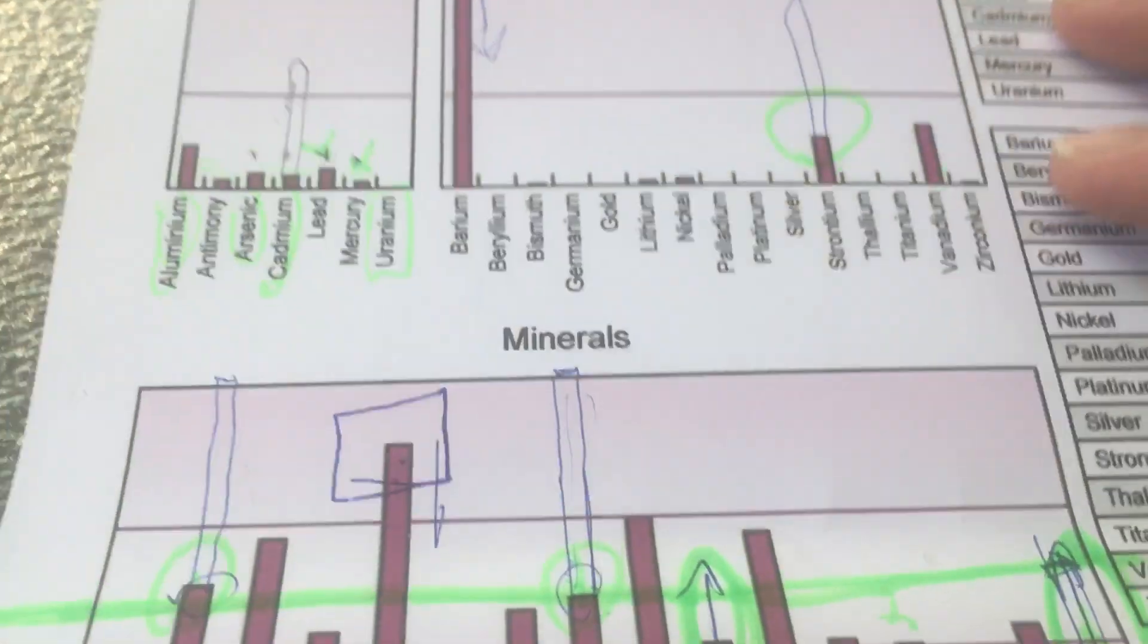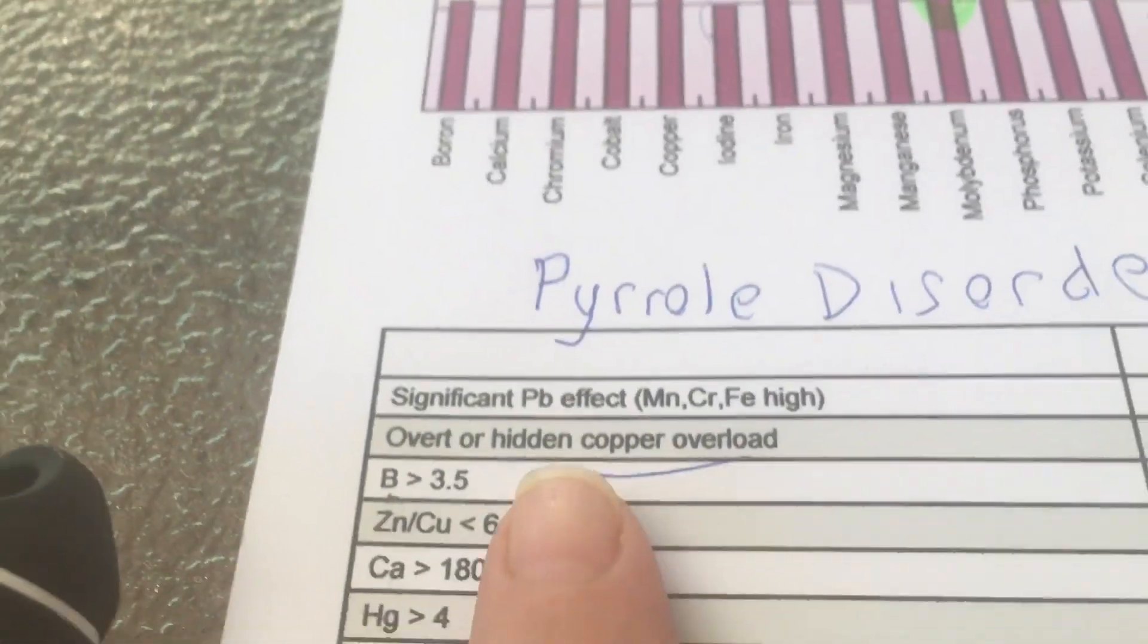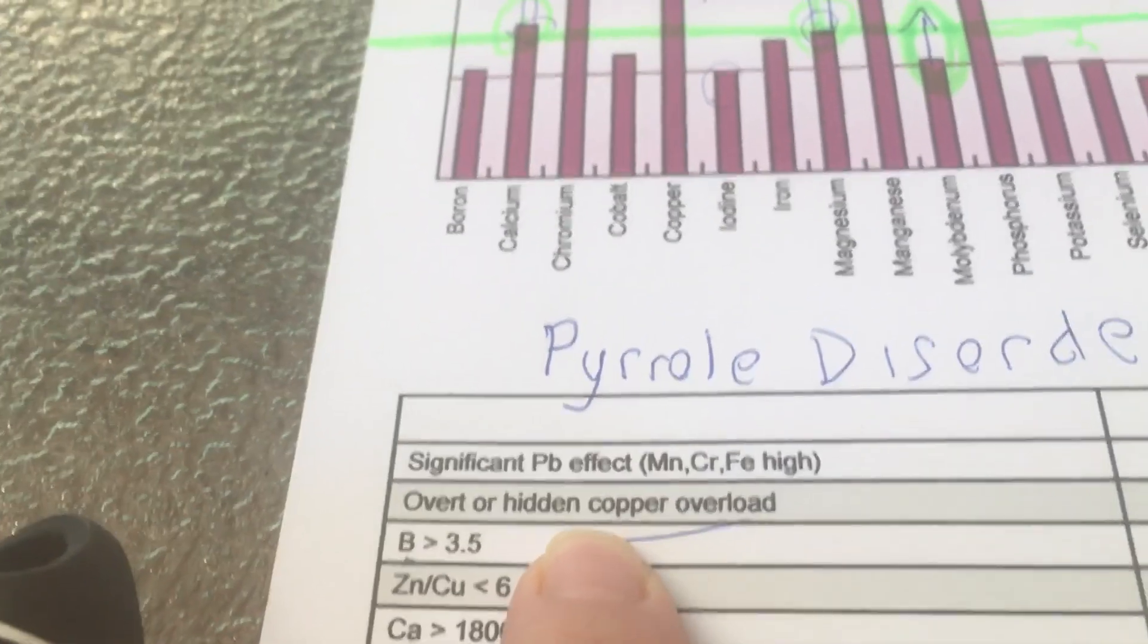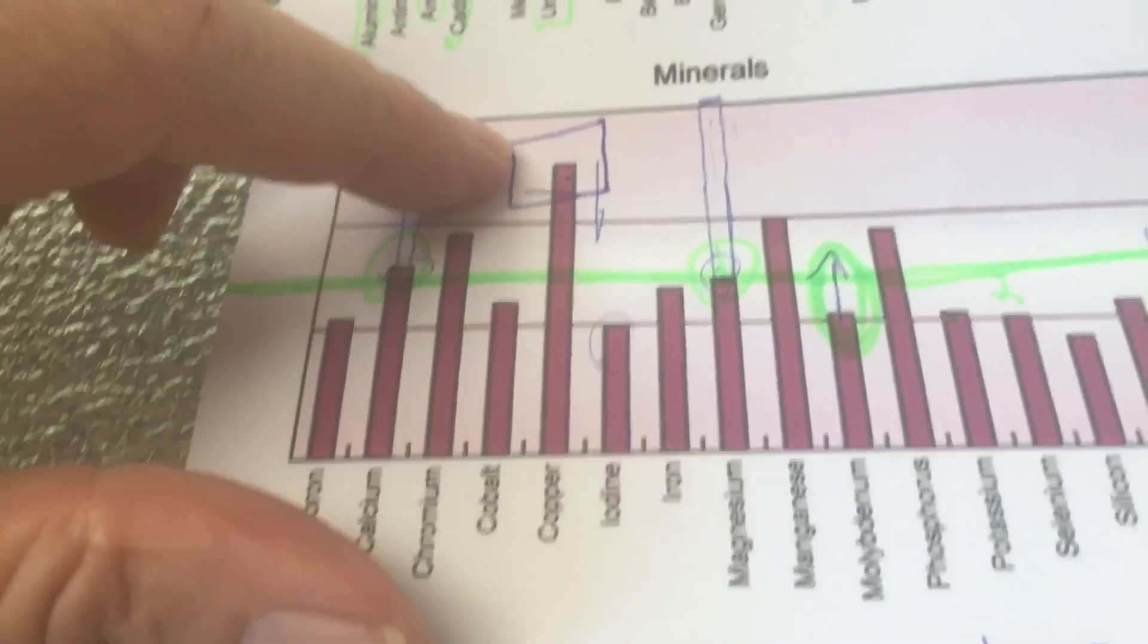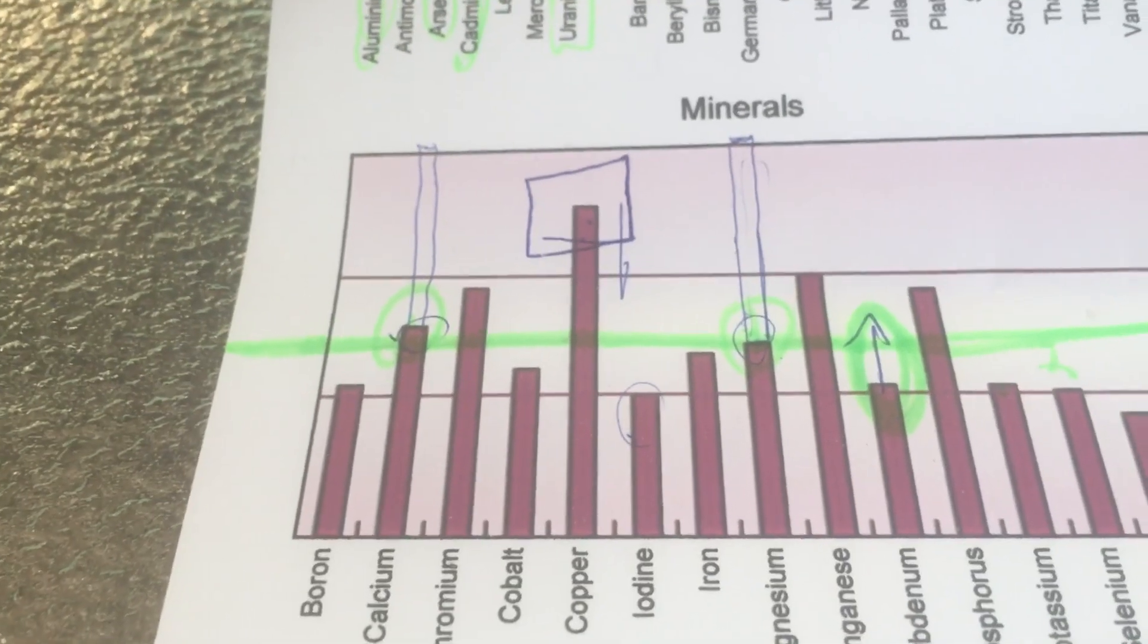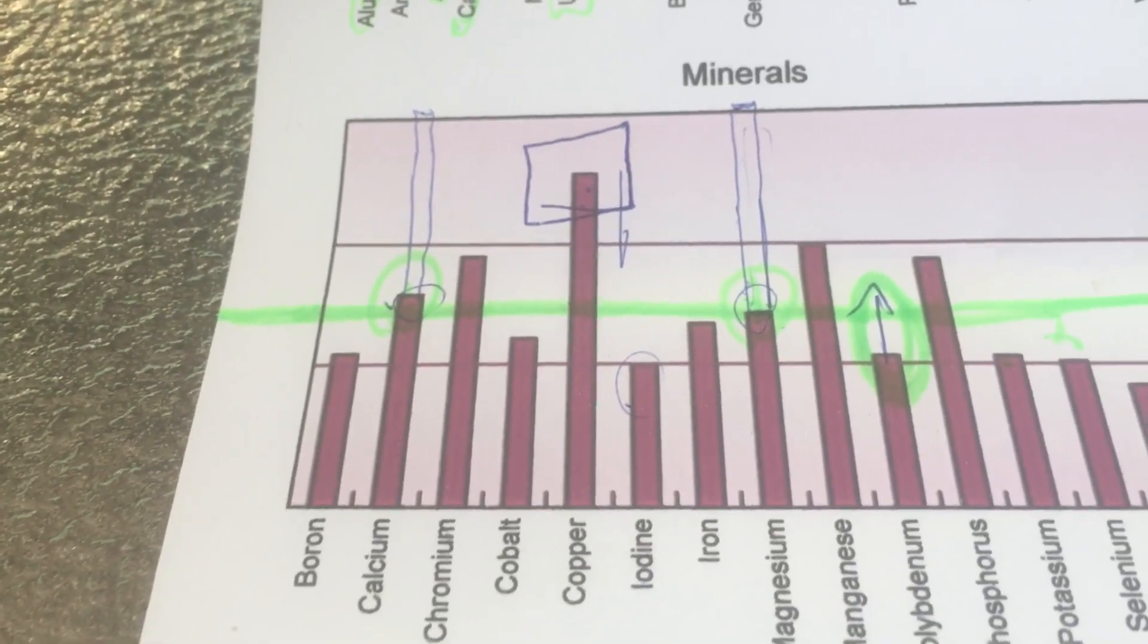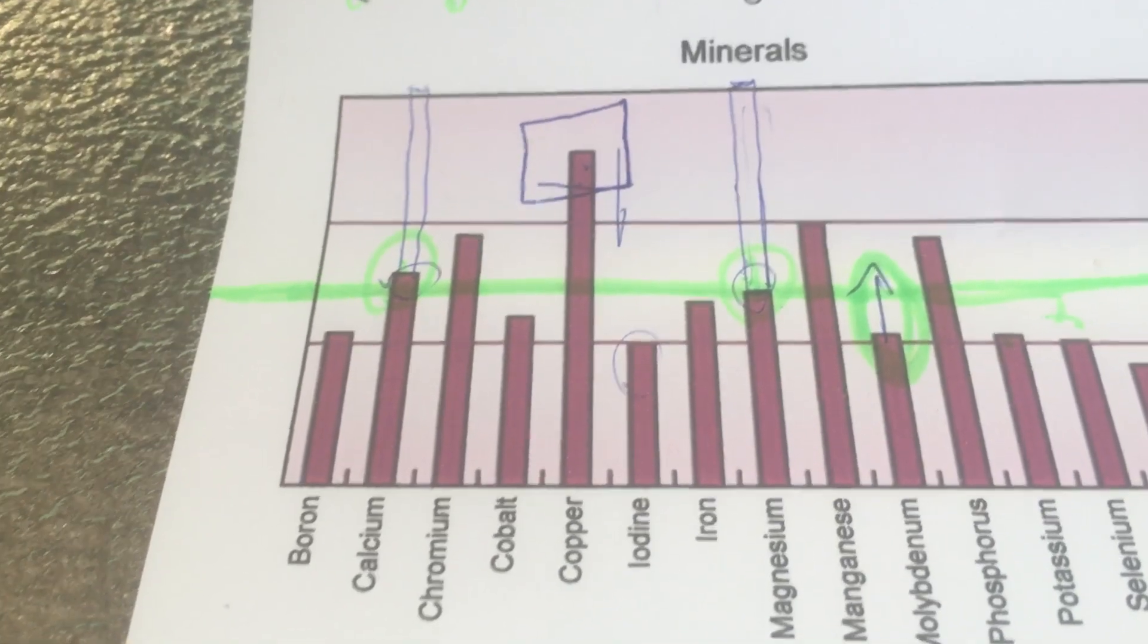Now we've also got down on this side here, it says overt or hidden copper overload. You can see my copper is absolutely through the roof, and if that carries on that will result in what's called Wilson disease. I haven't drunk out of the copper pipes - I don't drink the tap water for a couple of years now - so this just shows you what a lifetime of drinking out the copper taps will do and how it stays in your body.